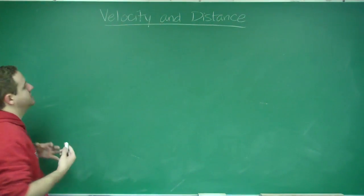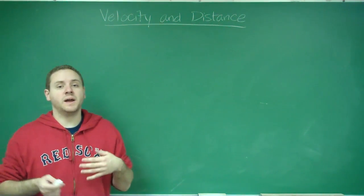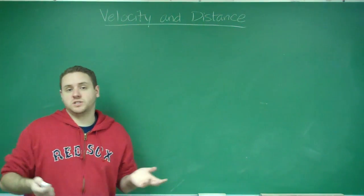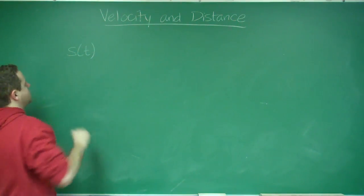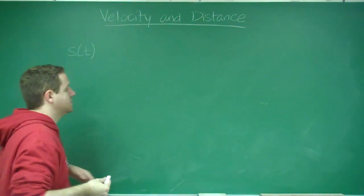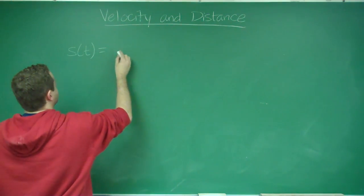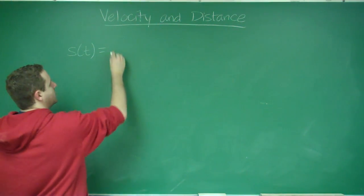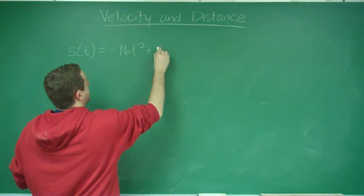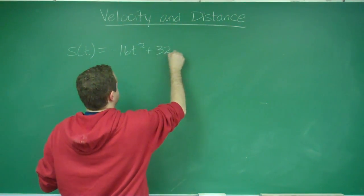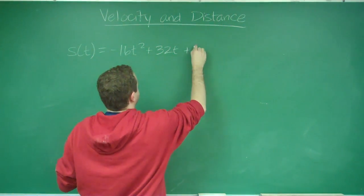So typically, position functions are going to be represented by maybe a height or just a regular type of displacement function, usually of the form S of t or maybe H of t. So let's do a quick example. Say we had the function negative 16t squared plus 32t plus 48.